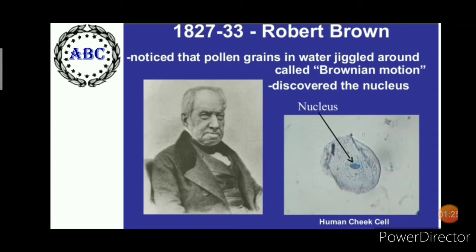In 1827 to 1833, Robert Brown noticed that pollen grains in water jiggled around, and that mechanism is called Brownian motion. He also discovered the nucleus from the cells of humans.